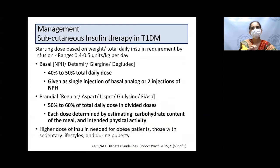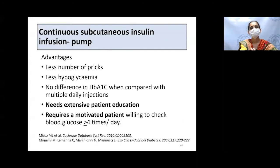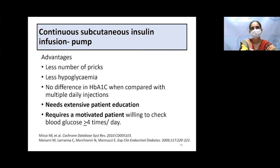When starting subcutaneous insulin therapy, the dose is usually 0.4 to 0.5 units/kg/day, with 40 to 50% as basal insulin and 50 to 60% as prandial insulin. Insulin therapy should always be adjusted for activity and food intake—this is an important aspect of patient education. Continuous subcutaneous insulin infusion pumps are a better option but require extensive patient education, a motivated patient willing to learn pump skills, and glucose monitoring at least four times daily to prevent silent DKA.